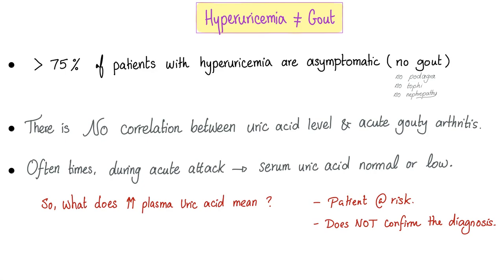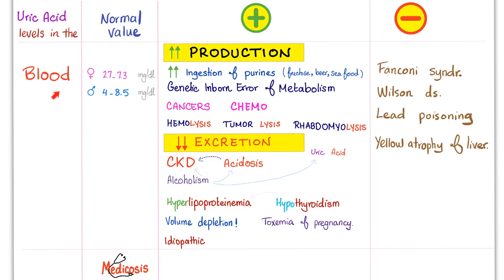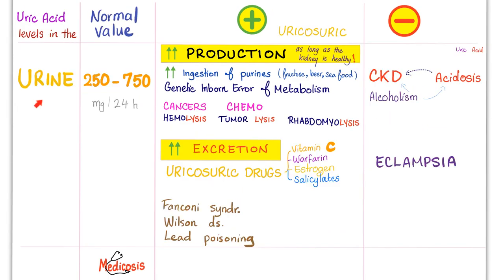Hyperuricemia is not the same as gout — it just means you are at high risk. Uricosuric agents increase secretion of uric acid, which increases uric acid in the urine. These agents that were on the previous slide (causing hyperuricemia) now shift — because they are uricosuric, they increase excretion of uric acid in the urine.